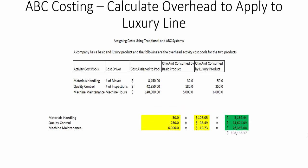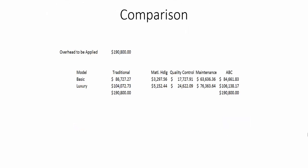Now we calculate and apply overhead to the luxury product line using the same logic as the previous slide, but with the luxury model's actual activity. We take 50 moves times the rate of $103.05, which gives just over $5,000 from the total cost bucket associated with materials handling. The same logic follows through for quality control and machine maintenance for the luxury line.